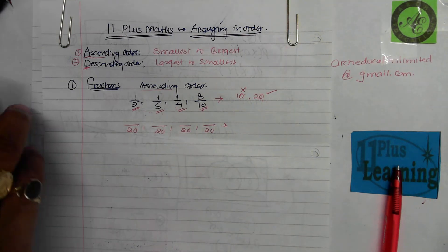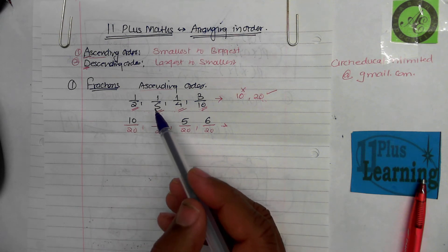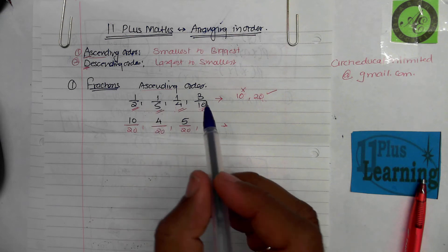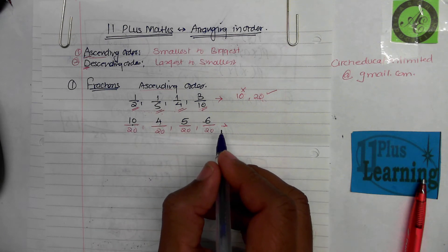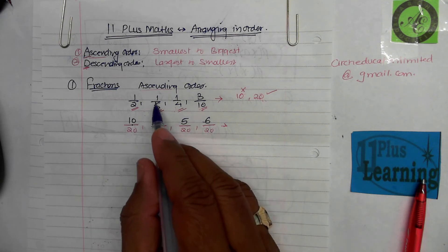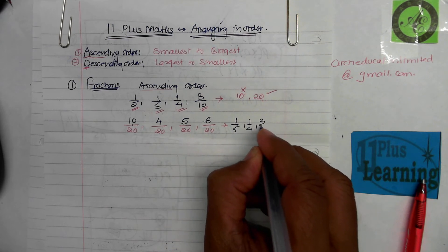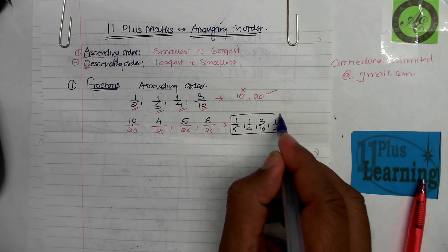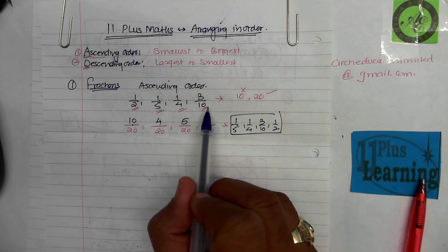I would like you to write all these fractions with twenty as the denominator. Once you've done that, we reach this stage. Five goes into twenty four times, that's why we times the numerator by four as well. So you can see four, five, six, and ten should be the answer. Numerators become important now. The answer is the original fractions: one-fifth, one-quarter, three-tenths, and one-half. This is your final answer in ascending order. If the same question asked you to put these fractions in descending order, you just write them in reverse order.